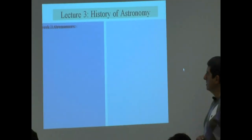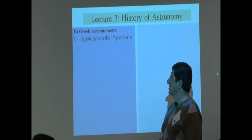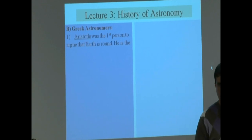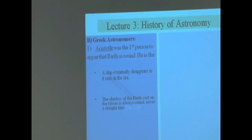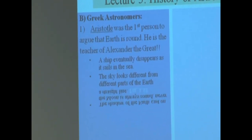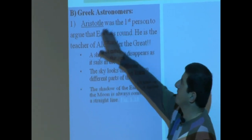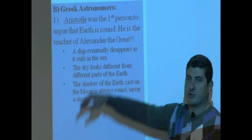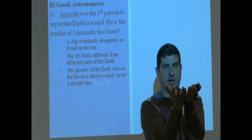Now we go to some of the key Greek astronomers. We'll probably do Aristotle today and then continue with Aristotle. Aristotle was one of the first persons to argue that the earth is round - a spherical earth.